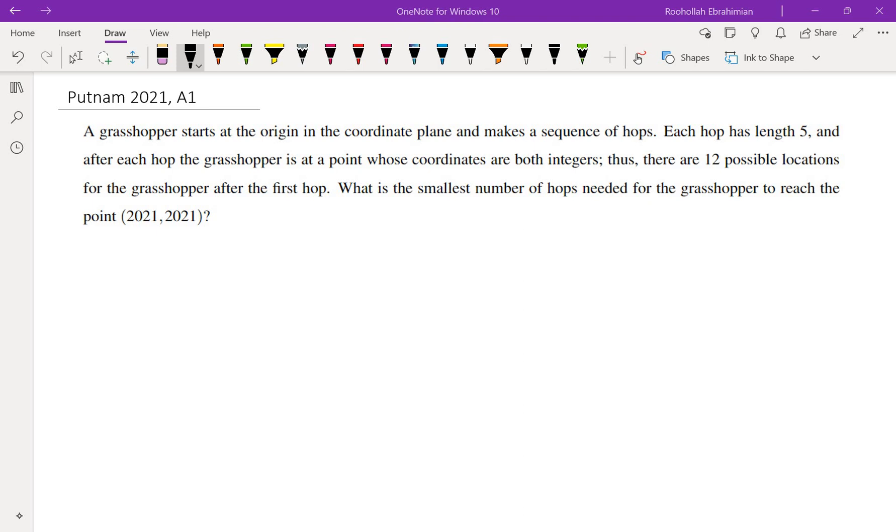A grasshopper starts at the origin in the coordinate plane and makes a sequence of hops. Each hop has length 5, and after each hop the grasshopper is at a point whose coordinates are both integers. Thus there are 12 possible locations for the grasshopper after the first hop. What is the smallest number of hops needed for the grasshopper to reach the point (2021, 2021)?